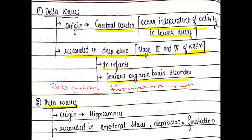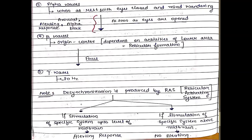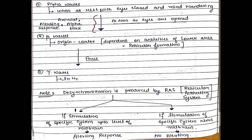Theta waves originate from the hippocampus, which is part of the limbic system concerned with emotional states. Therefore, theta waves are recorded in emotional states — such as depression, frustration, and stress.